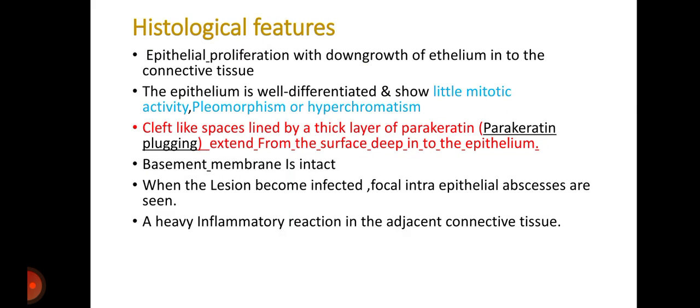Coming to histological features. There is generally marked epithelial proliferation with downgrowth of epithelium into the connective tissue. The epithelium is well differentiated and shows little mitotic activity, pleomorphism, or hyperchromatism. Cleft-like spaces are lined by a thick layer of parakeratin. Parakeratin plugging, which is the hallmark of verrucous carcinoma, extends from the surface deep into the epithelium.